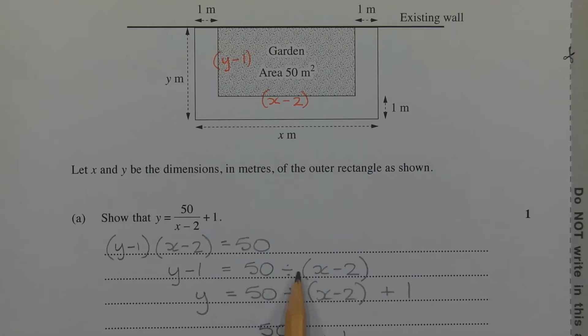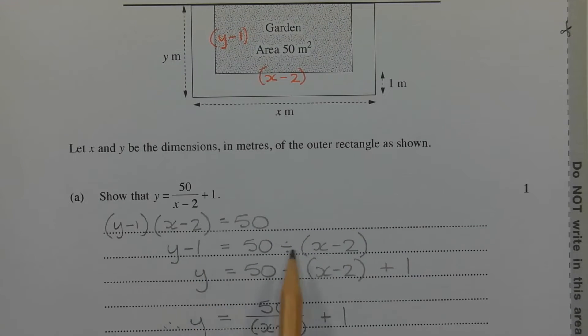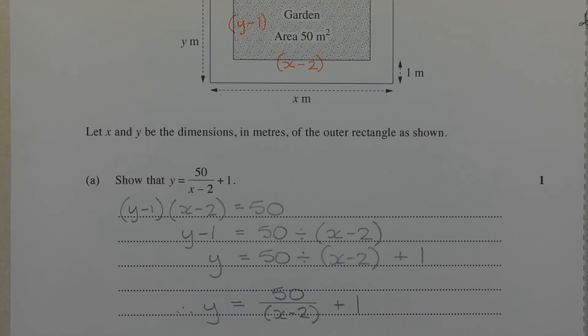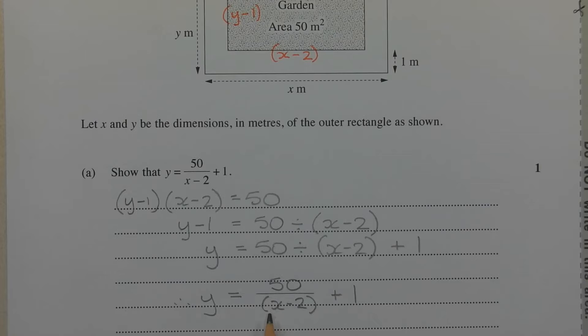I just wrote it using the division symbol because I find it a little bit easier to write it using the lines given in this way. The next step is to add 1 to both sides of the equation. So we end up with y is equal to 50 divided by x minus 2 in brackets plus 1. And expressing it in fraction form, we end up with y equals 50 over x minus 2 plus 1.